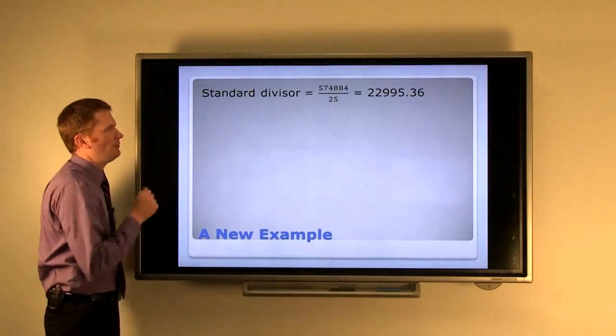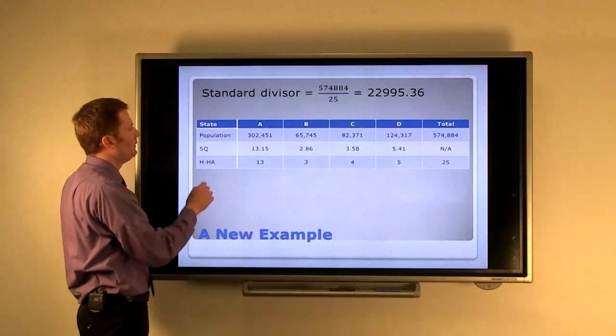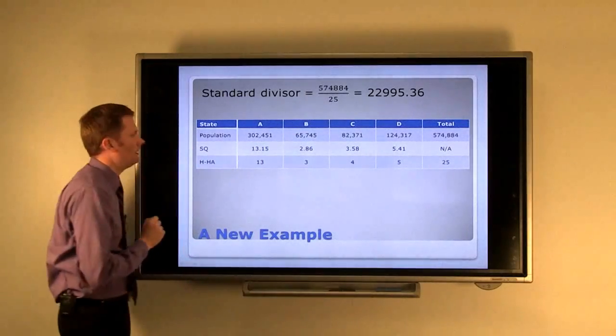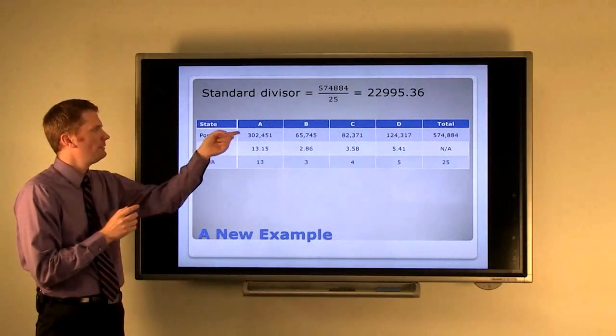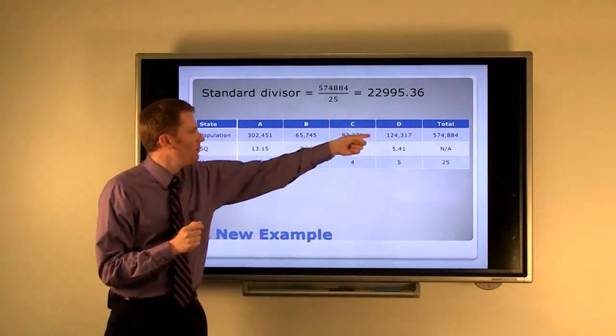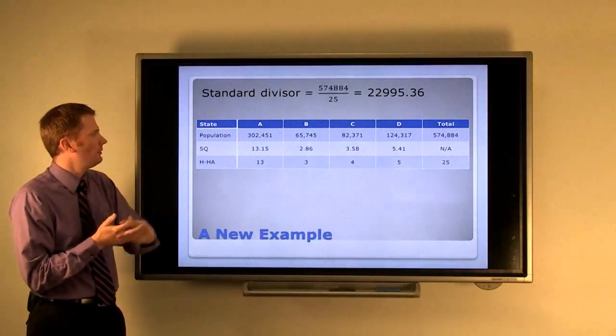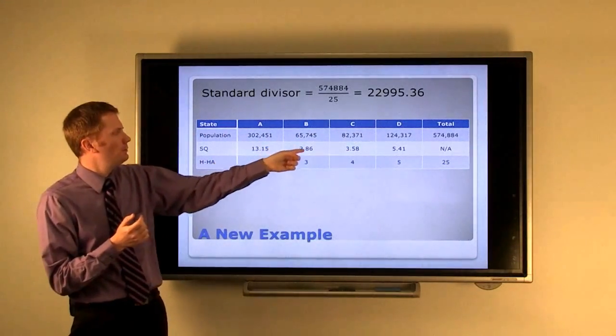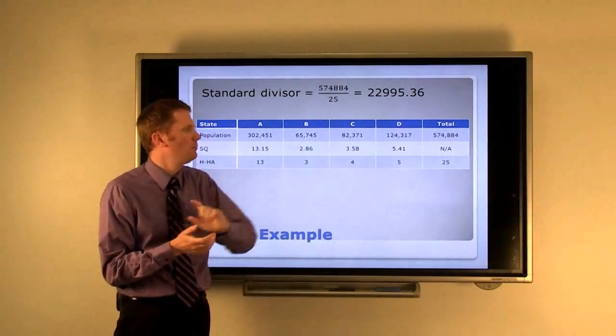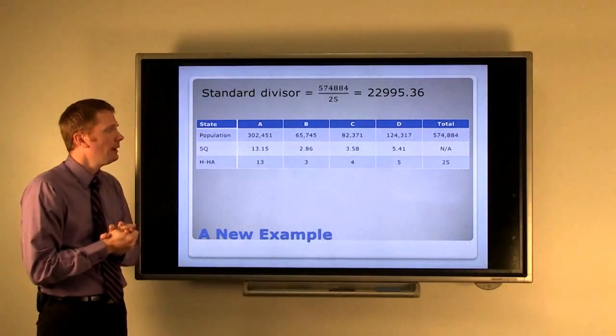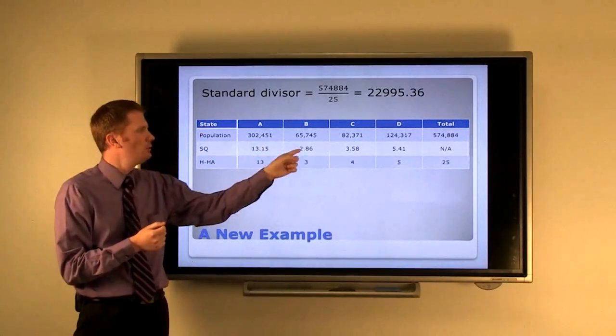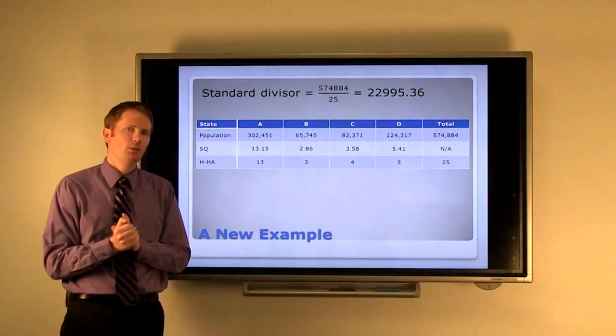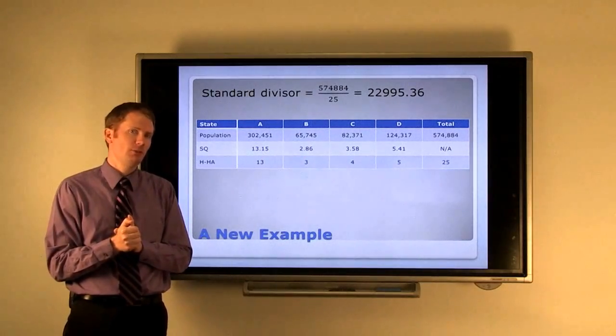I've got the standard divisor up here for reference and all our populations. I've just started off by dividing these populations by the standard divisor. We get 13.15, 2.86, 3.58, and 5.41.